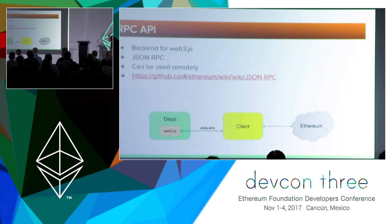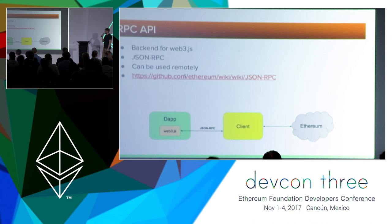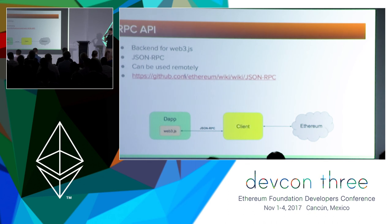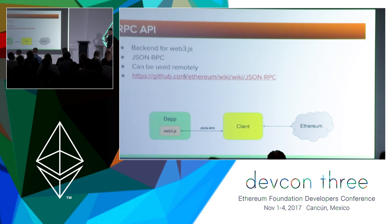RPC is the primary way for dApps to communicate with the client, and since dApps are the main users of Ethereum clients, RPC is essentially the main interface of the client. JSON-RPC is used as the RPC protocol and can be used both with a locally run client or remotely over HTTP. If you're a dApp developer, RPC is what underlies the Web3.js interface used in dApp code to communicate with the node. The API spec lists the methods a client must provide to be usable by dApps.